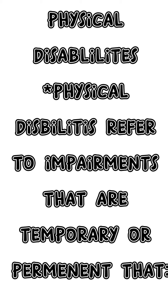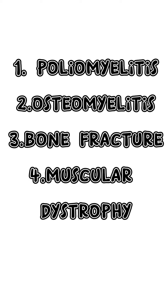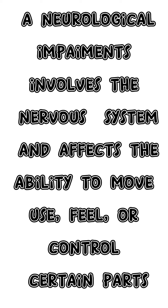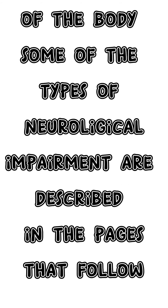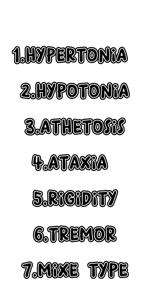Types of physical disabilities. Physical disabilities refer to impairments that may be temporary or permanent. A neurological impairment involves the nervous system and affects the ability to move, use, feel, or control certain parts of the body. Some types of neurological impairments are described in the pages that follow, including cerebral palsy.